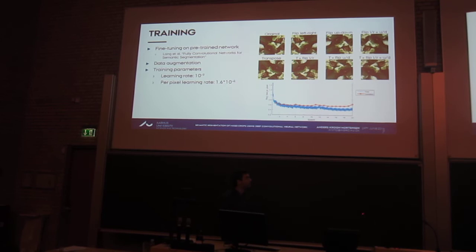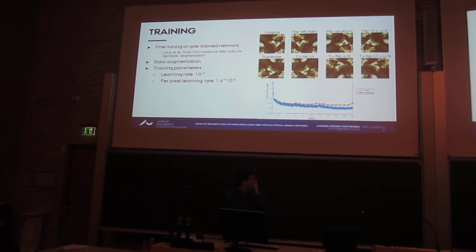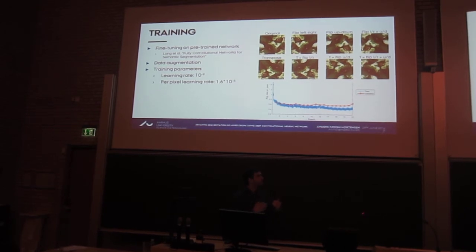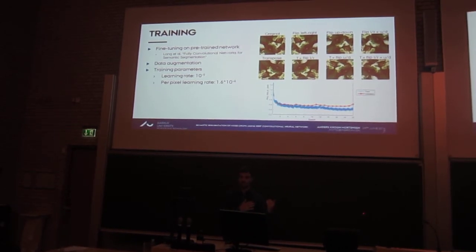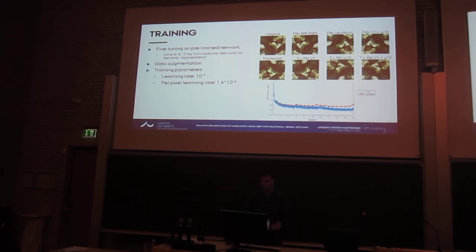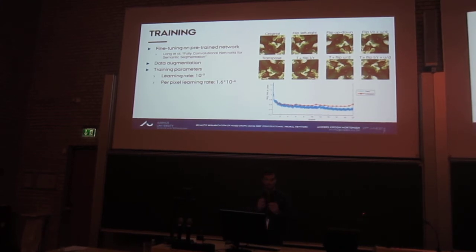We didn't really have that much data, so we needed to cheat a little bit. So we used transfer learning — we took the parameters learned by Lohm et al. and used those, then just did fine-tuning on this pretrained network. We also used data augmentation where we applied some transformations to the same image so that we could reuse it.